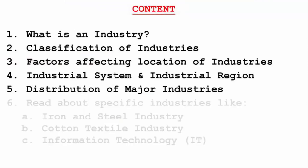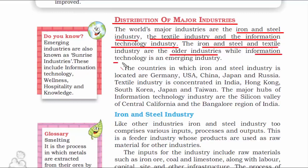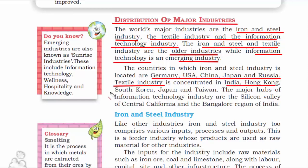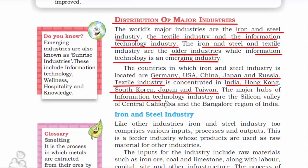The next topic is distribution of major industries. Three of the world's major industries are iron and steel industry, the textile industry, and the information technology industry. Iron and steel is the oldest — since the industrial revolution took place in the 18th century, it has to be the oldest industry in the world. On the other hand, information technology is an emerging industry. Countries where iron and steel industry is located include Germany, USA, China, Japan, and Russia — and naturally these countries also produce heavy machineries and cars. The textile industry is mainly concentrated in India, Hong Kong, South Korea, Japan, and Taiwan. The hub of information technology is Silicon Valley, and in India it's located in Bangalore.